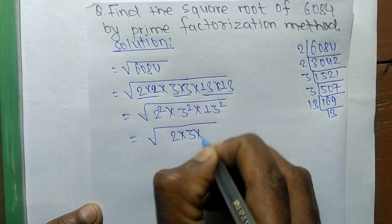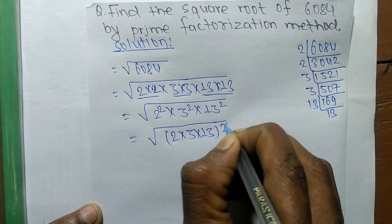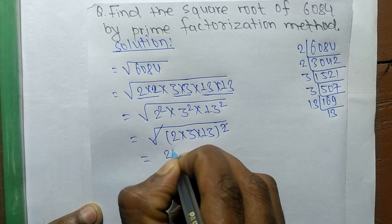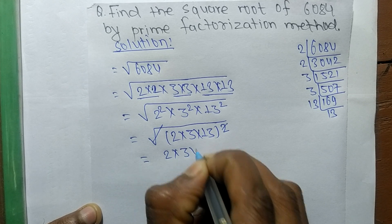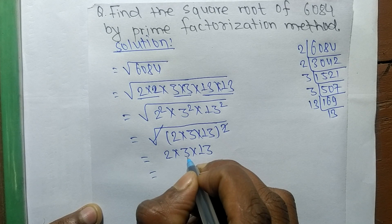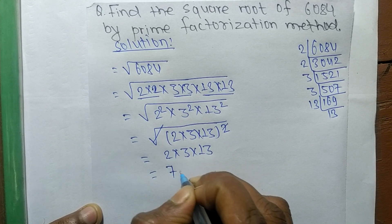Square and square root cancel each other, so the remaining numbers are 2×3×13. So 2×3 means 6, and 6 times 13 means 78.